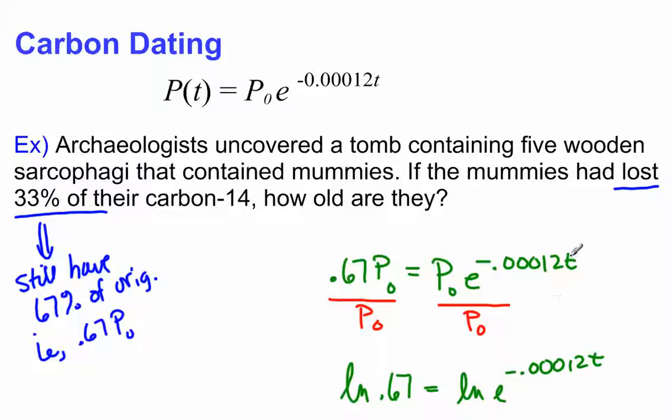I have an exponential equation to solve for T then, so I need to isolate this part with the E, the exponential part. So I'm going to divide through by the P sub zero on both sides.